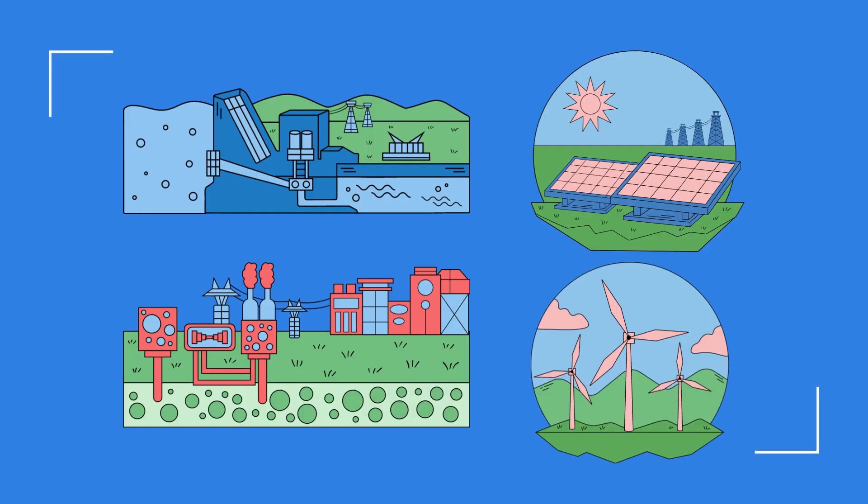Transitioning to clean, renewable energy is one crucial step that we can take to combat ocean acidification. By reducing our reliance on fossil fuels, we can decrease the amount of carbon dioxide released into the atmosphere and slow down the acidification process.